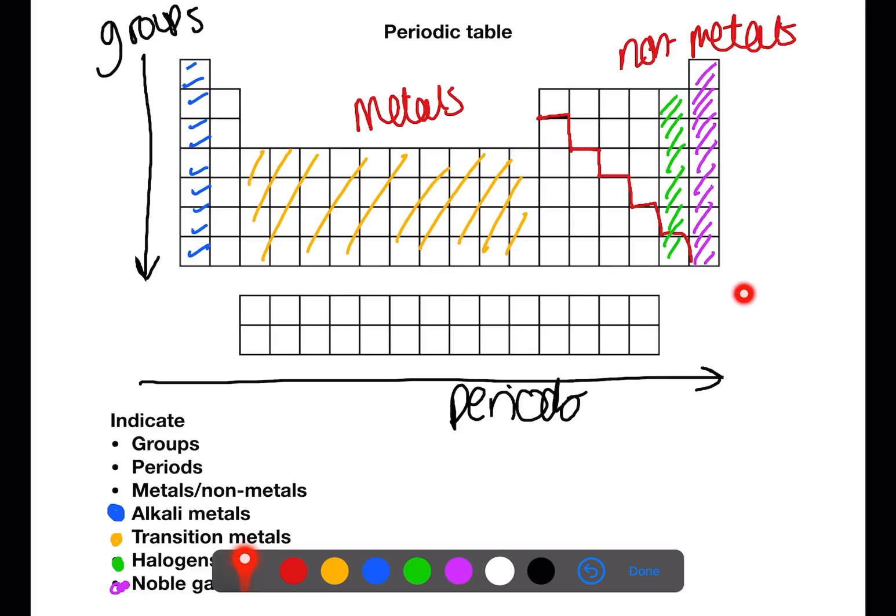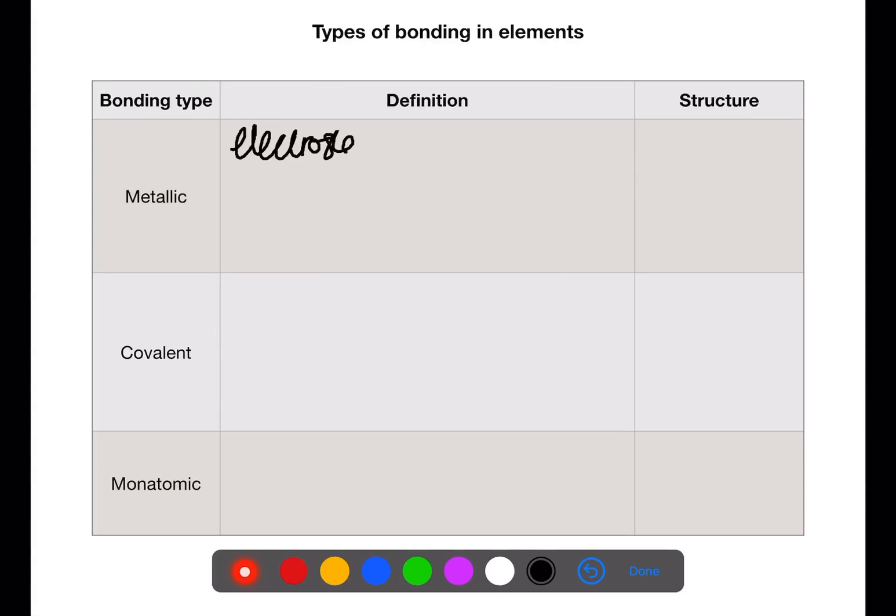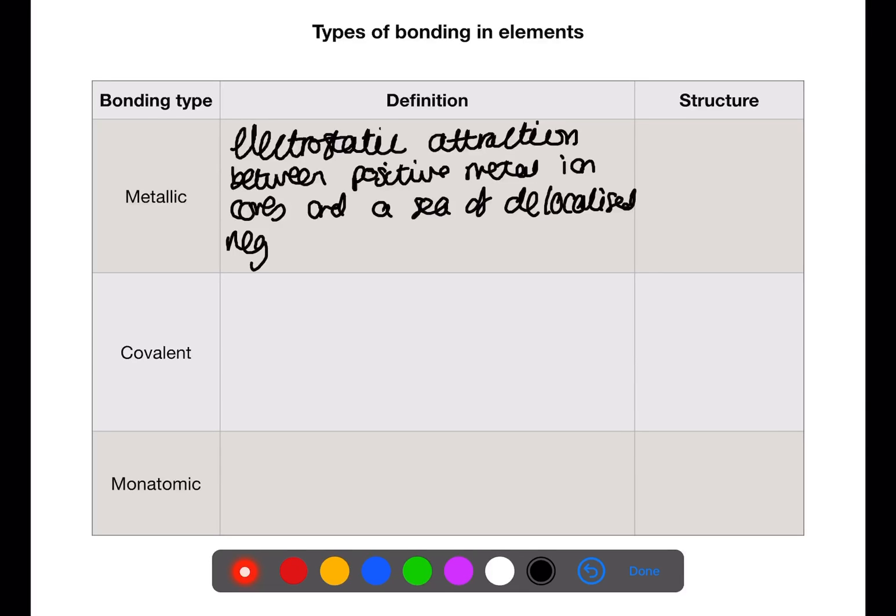Moving from left to right across the periodic table the element bonding changes from metallic to covalent to monatomic. Let's have a look at the different types of bonding. Metallic bonding can be defined as an electrostatic attraction between positive metal ion cores and a sea of delocalised negative outer electrons.